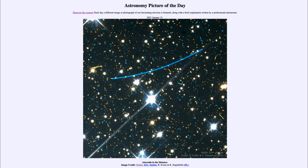Today's picture for January 31st, 2021 is titled Asteroids in the Distance. What do we see here? Well, this is actually an image that shows an asteroid track, the blue track across the top showing an asteroid in an image taken by the Hubble Space Telescope.